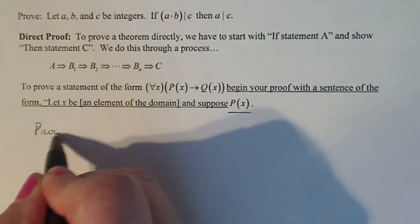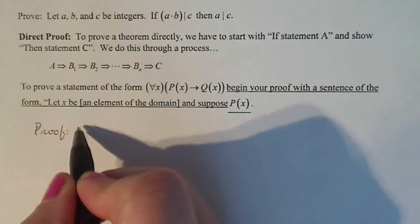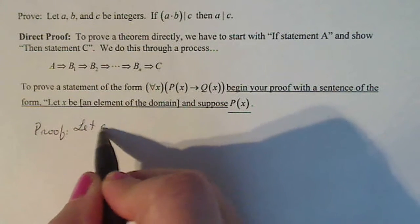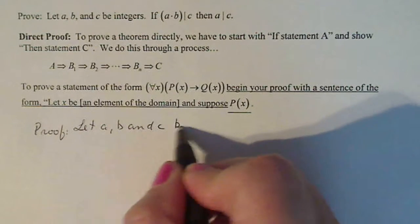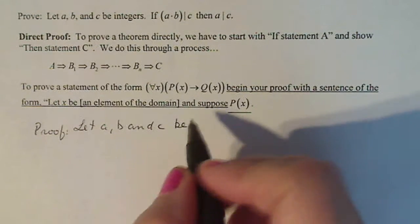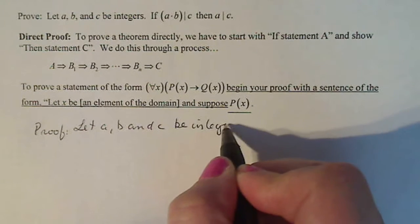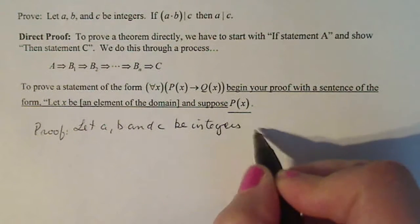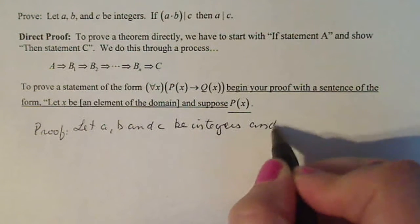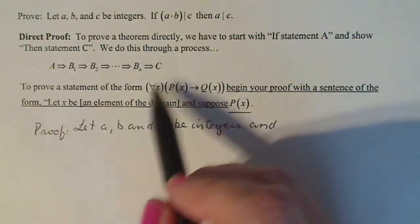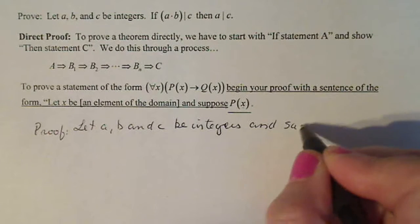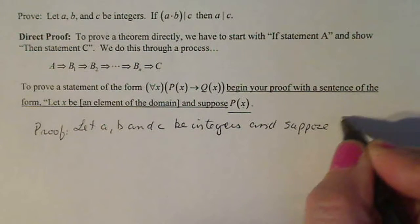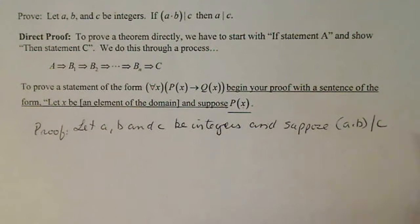Here's the beginning of the proof. We're going to say let a, b, and c be what kind of numbers? Integers. And then according to this, we're supposed to suppose p of x, which in our case is a times b divides c. So suppose a times b divides c.